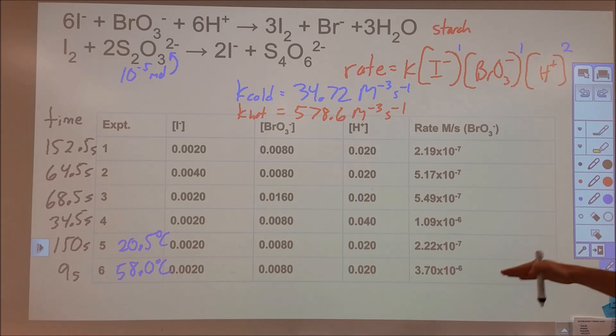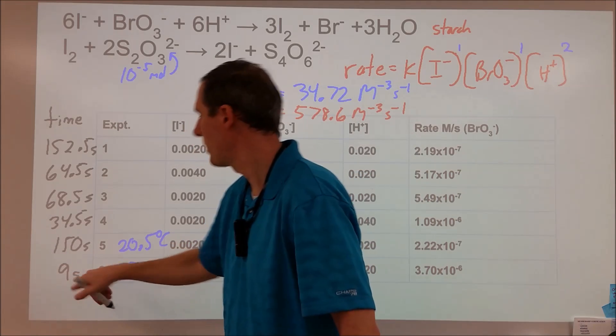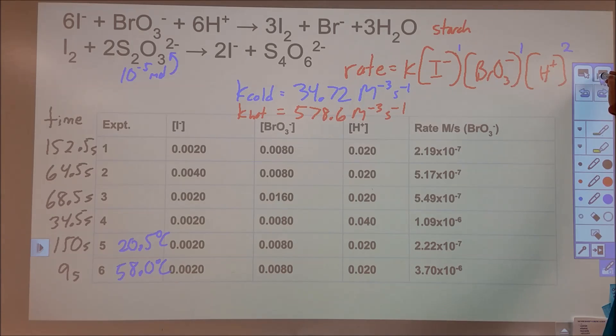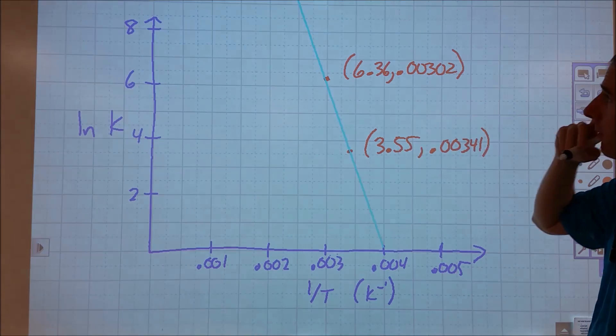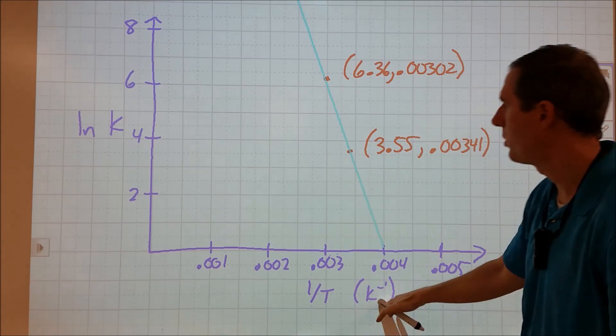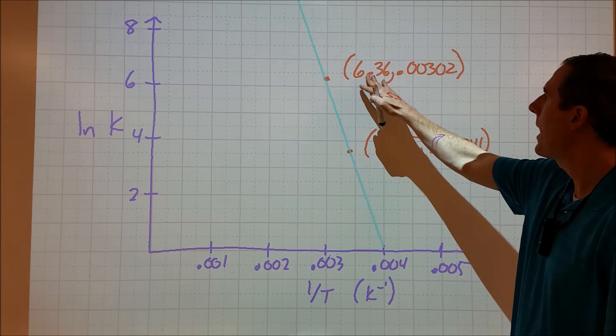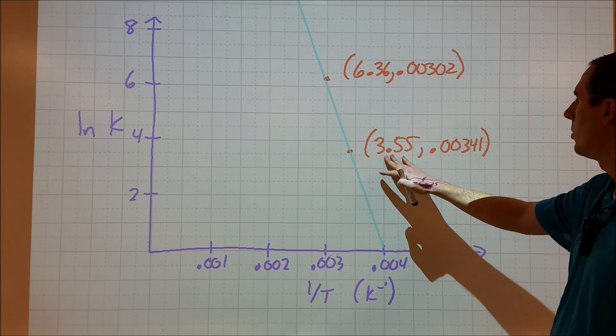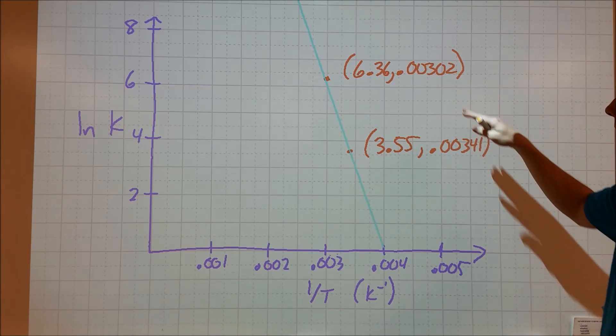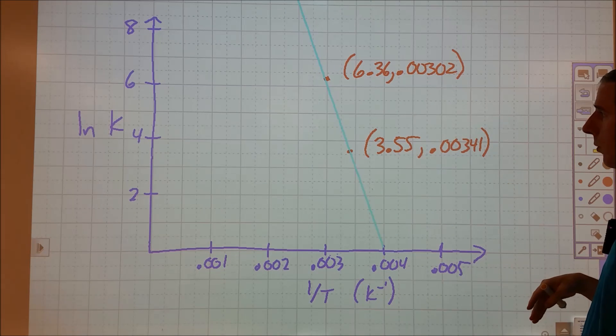So now what we can do is we can take those two final data pieces, and we can go through and we can figure out, what's the activation energy? Now, ideally, we'd have more than two data points, and ideally we wouldn't have so much uncertainty in part 6 here, but what we can now do is we can plot that. So to do that, we're going to come over here, and we're going to plot the natural log of those two rate constants versus one over the temperature while they're in Kelvins. So for the natural log of the hot, it was 6.36. For the natural log of the cold, it was 3.55. For the one over temperature in Kelvins, it was 0.00302 and 0.00341.